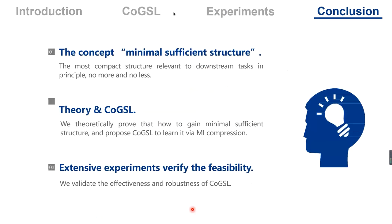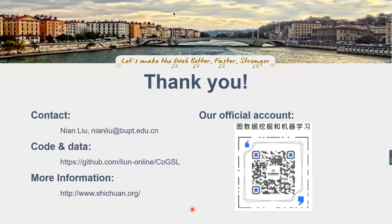And finally, let's draw some conclusions. In this paper, we propose the concept of minimal sufficient structure, the most compact structure relevant to downstream tasks in principle, no more and no less. And we theoretically prove how to gain minimal sufficient structure and the proposed CoGSL to learn it via mutual information maximization. And finally, we do extensive experiments to verify the effectiveness and robustness of CoGSL. Thank you. That's all for my presentation. Here are some information about this work, and here is our official account. Welcome to join us. Thank you.